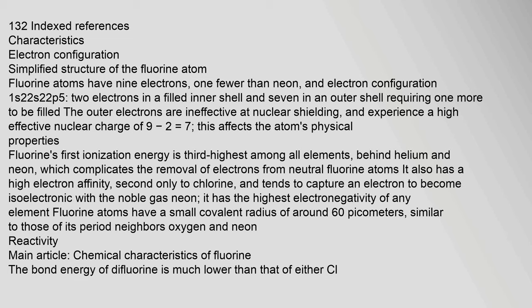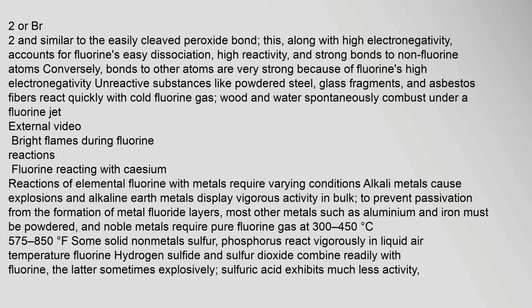Fluorine atoms have nine electrons, one fewer than neon, with an electron configuration of 1s² 2s² 2p⁵ — two electrons in a filled inner shell and seven in an outer shell requiring one more to be filled. The outer electrons are ineffective at nuclear shielding and experience a high effective nuclear charge of 9 minus 2, equals 7. Fluorine's first ionization energy is third highest among all elements, behind helium and neon, complicating the removal of electrons from neutral fluorine atoms. It also has a high electron affinity, second only to chlorine, and tends to capture an electron to become isoelectronic with the noble gas neon. It has the highest electronegativity of any element. Fluorine atoms have a small covalent radius of around 62 pm.